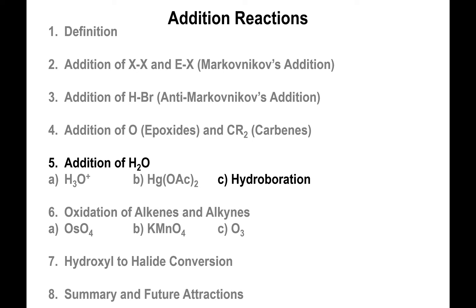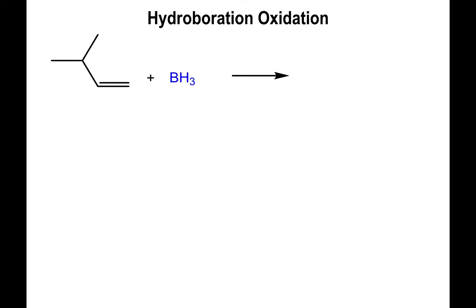Let's talk about hydroboration. In this particular addition reaction, we treat an alkene with borane, BH3. Not to be confused with BH4 minus, which is a hydride reagent — one that we use to remove mercury from the initial addition product of oxymercuration-demercuration.